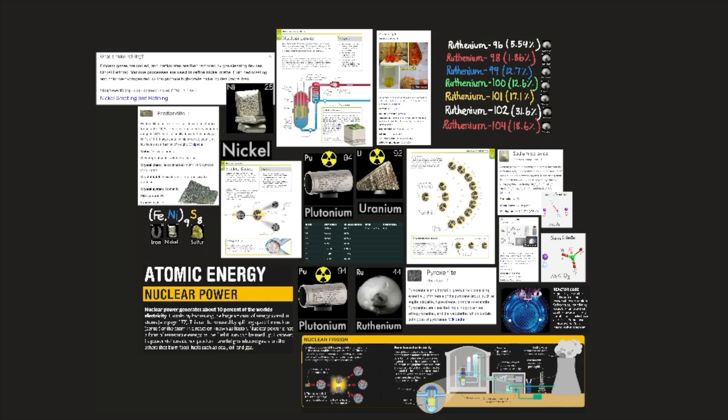Natural ruthenium consists of a mixture of seven stable isotopes. Ruthenium-96, 5.54%, ruthenium-98, 1.86%, ruthenium-99, 12.7%, ruthenium-100, 12.6%, ruthenium-101, 17.1%, ruthenium-102, 31.6%, and ruthenium-104, 18.6%. All of those percentages should add up to 100%. It has four allotropic forms.